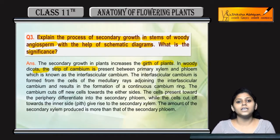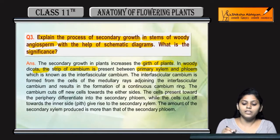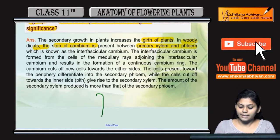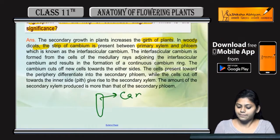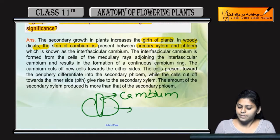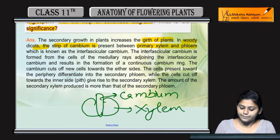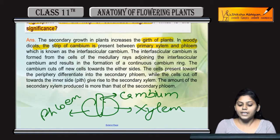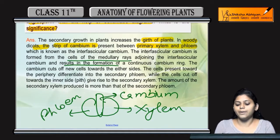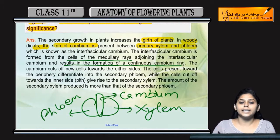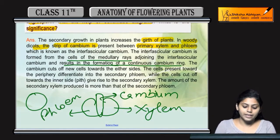Strips of cambium कहां present होती है? In between xylem and phloem — cambium की strip होती है। उसके आसपास xylem and phloem होते हैं। Medullary rays से results in the formation of a continuous cambium ring — जितने भी xylem phloem वहां पर present होंगे उनके around ये एक cambium ring बनाएगी।